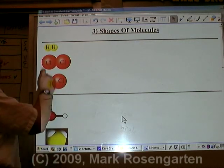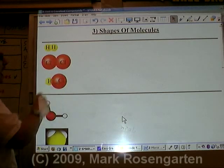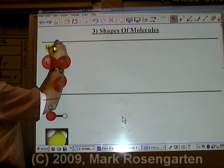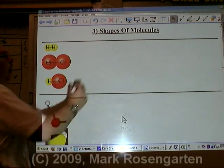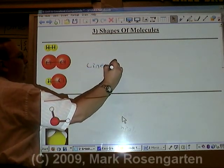The simplest shape is if you have a molecule made of two atoms. The atoms are arranged in a straight line, therefore it's called a linear molecule.